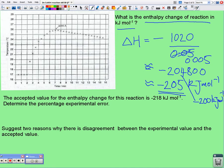The accepted value for the enthalpy change is negative 218 kilojoules per mole. So, to determine the percentage error, well, the percentage error, we take the actual value, negative 218, we subtract from that our value, the experimental value, let's say negative 200, and divide that by the actual value, and multiply by 100, that's our experimental error.